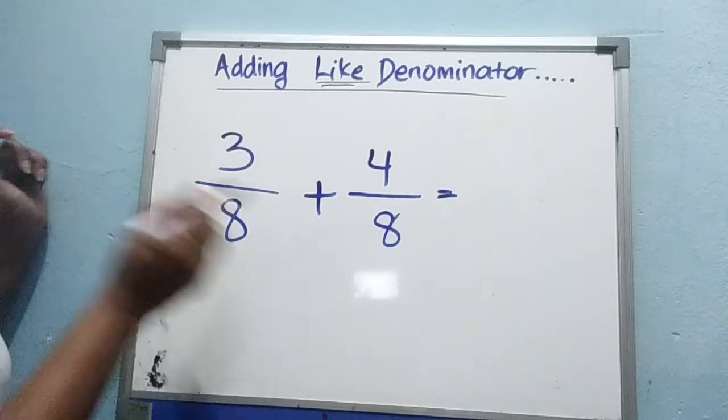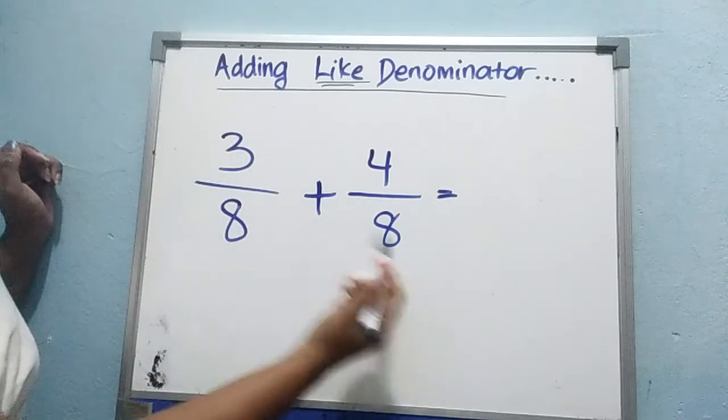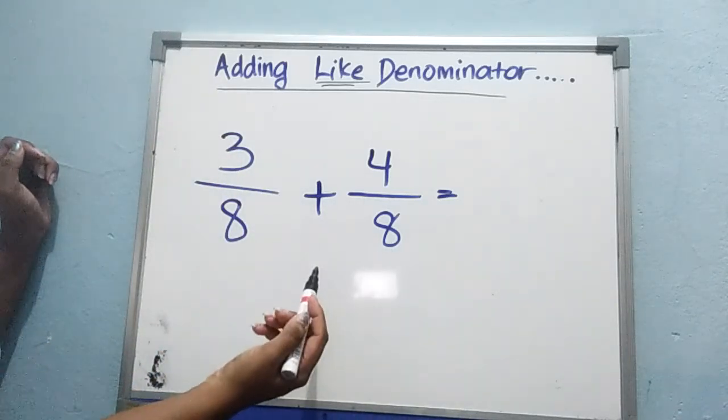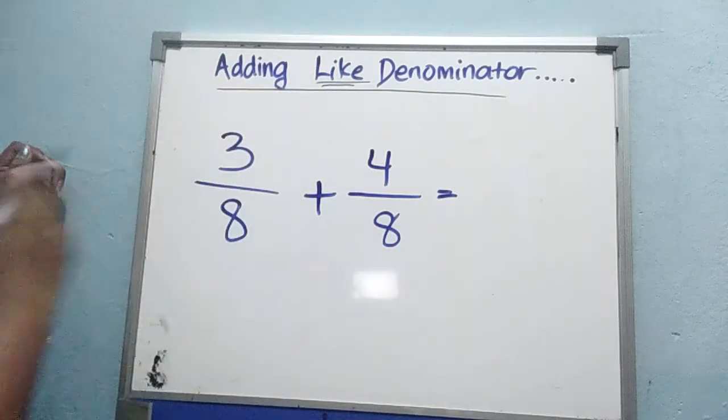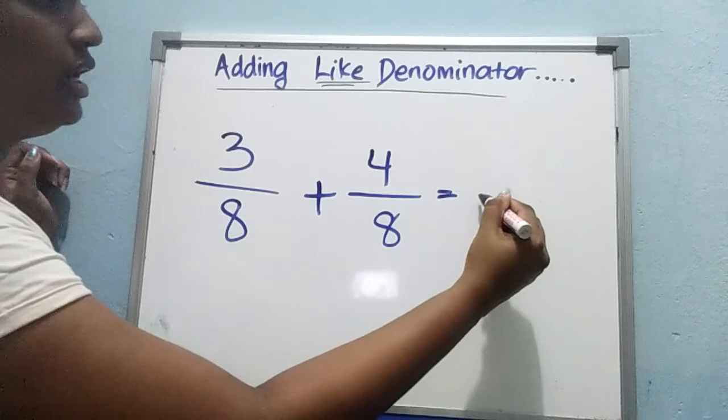Now, how to add if your denominators are the same number? That is very easy compared to unlike denominators, right? Very simple. What do you do? Draw a line first.